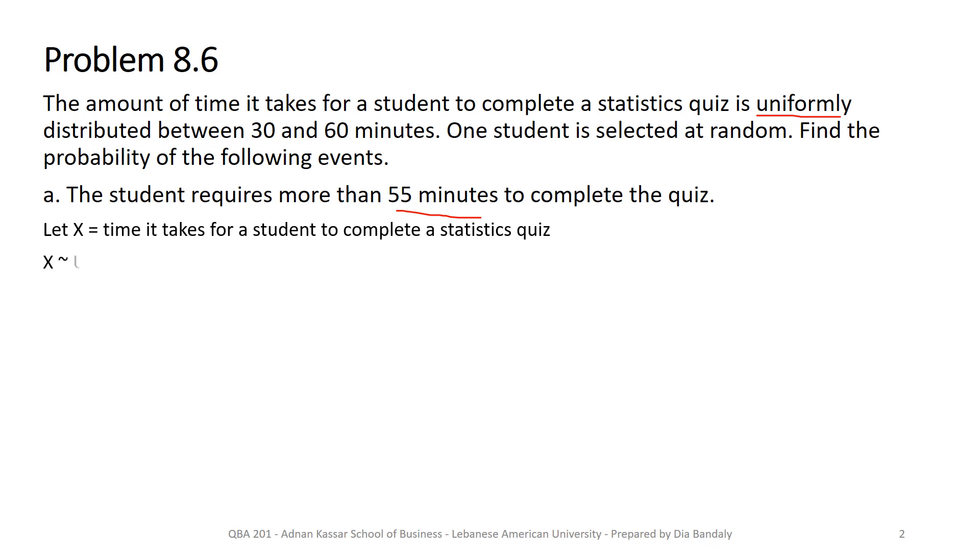So let's define our variable. The variable is the time it takes students to finish this quiz as given on the top. So I can describe X as being a uniformly distributed variable with two parameters a and b and we are always given these parameters. Usually you get them from historical data and here we are given that these are 30 and 60 as was given for us in the first paragraph.